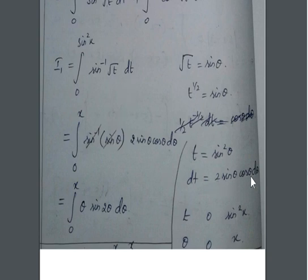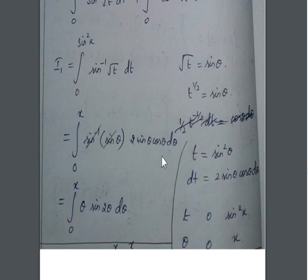Since √t = sin θ, we have sin⁻¹(√t) = sin⁻¹(sin θ) = θ. The sin⁻¹ and sin cancel, leaving θ. And dt = 2 sin θ cos θ dθ, which by the formula 2 sin a cos a = sin 2a can be written as sin 2θ dθ. So I1 becomes the integral from 0 to x of θ sin 2θ dθ.